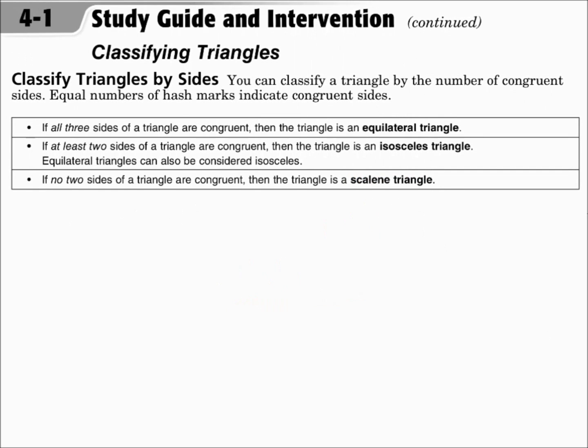You can also classify triangles by side lengths. If all three sides are congruent, then it's an equilateral triangle. If at least two sides are congruent, then it's isosceles. Equilateral triangles are also isosceles, since they do have at least two sides congruent. And if all sides are different, then it's scalene.